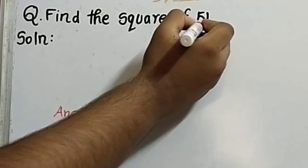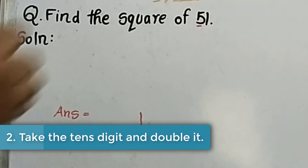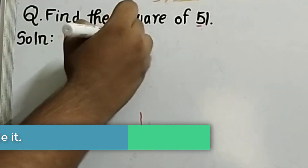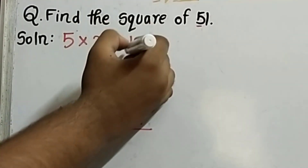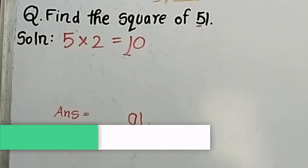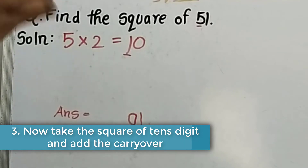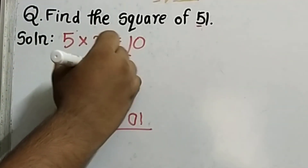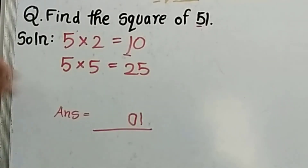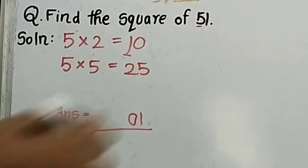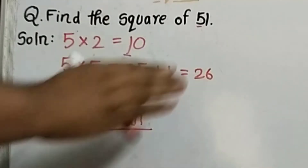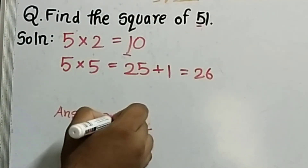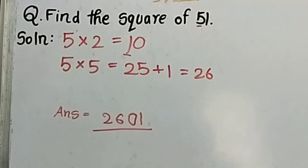Take the 10th digit, which is 5, and double it: 5 into 2 equals 10. Write 0 in the 10th place and take 1 as carryover. Now square the 10th digit: 5 into 5 equals 25. Add the carryover: 25 plus 1 equals 26. Write 26 at the extreme left. So our answer is 2601.